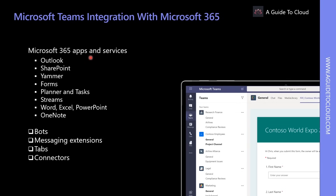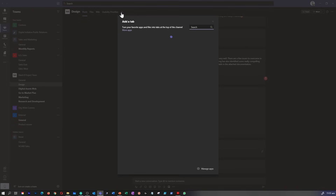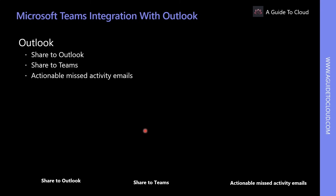By combining these together into a single product, employees can avoid constantly switching between various contexts and instead spend their time within a single team or channel that effortlessly brings together all relevant information. There are multiple ways to leverage Microsoft 365 apps and services in Teams — the most common scenario is to add a new tab to a Teams channel, or add content to a chat from Microsoft 365 services.